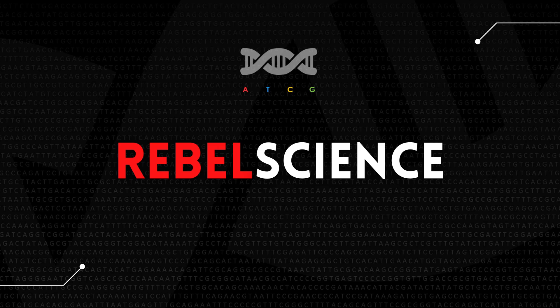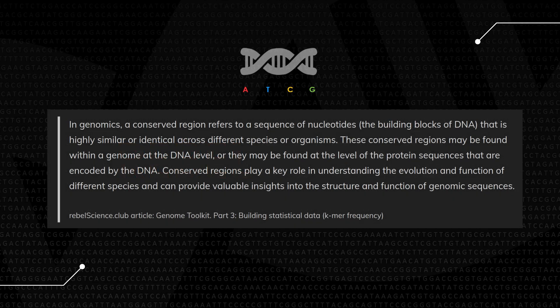We're going to be adding a new algorithm to our Genome Toolkit — the K-mer Frequency Algorithm — to help us build statistical data around K-mers in genomes. Biologists often use K-mers to identify patterns or motifs in genomic sequences, such as repeated patterns or conserved regions. In genomics, a conserved region refers to a sequence of nucleotides that is highly similar or even identical between species and organisms.